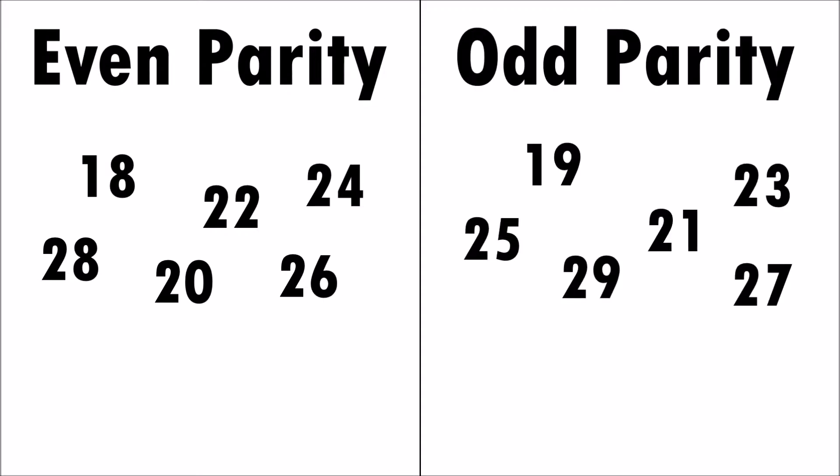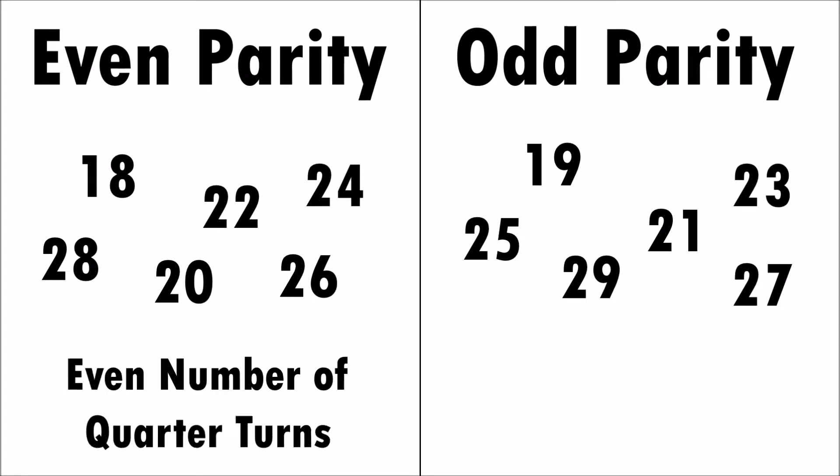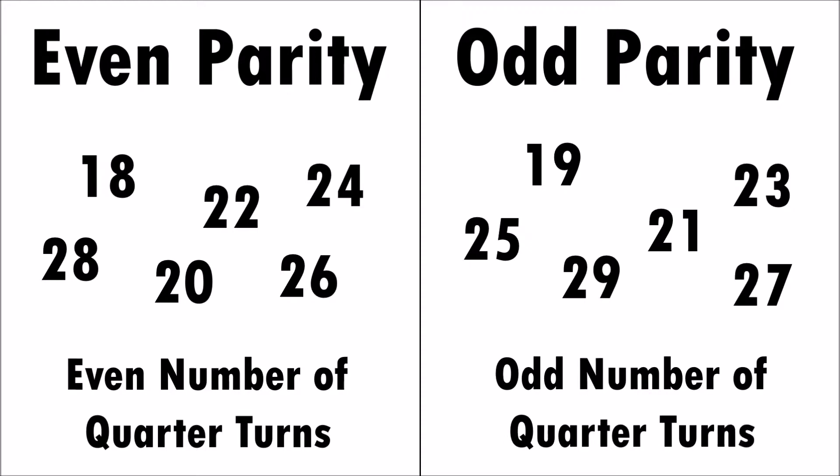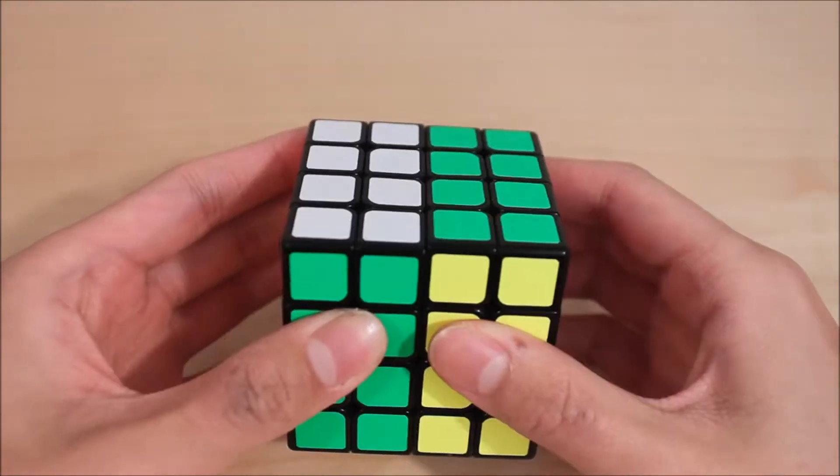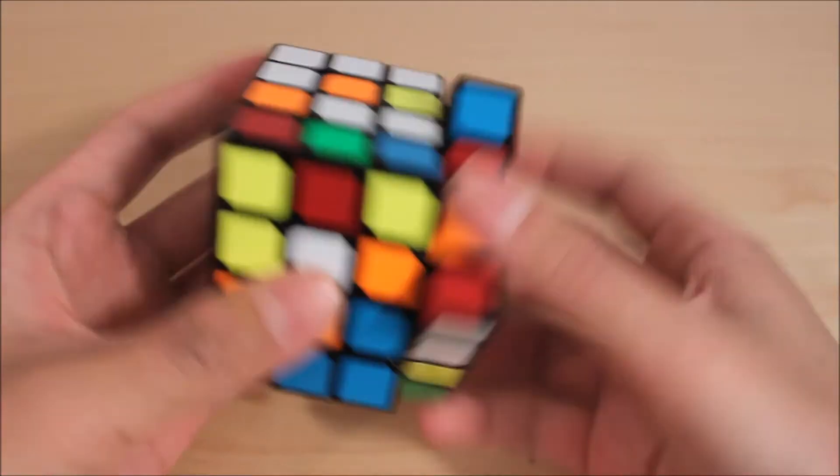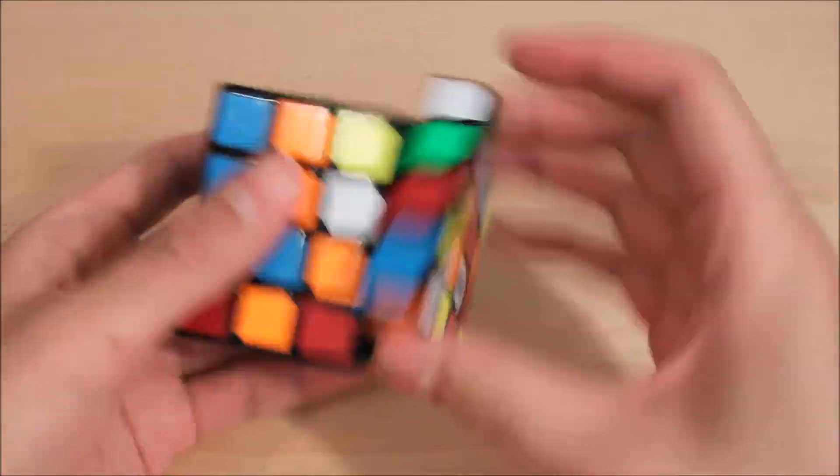If the cube has even parity, you'll have to solve it with an even number of inner quarter turns. If it has odd parity, you'll need to solve it with an odd number of inner quarter turns. Inner quarter turns are moves like RW and RW'.